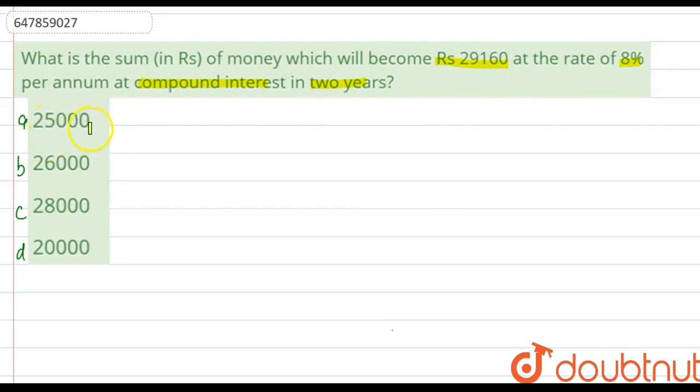Option A is Rs. 25,000, B is Rs. 26,000, C is Rs. 28,000 and D is Rs. 20,000. How will we solve this? We know what the formula is. Compound interest formula is P multiplied by 1 plus R by 100 to the power of t. Okay, this is how you get it.